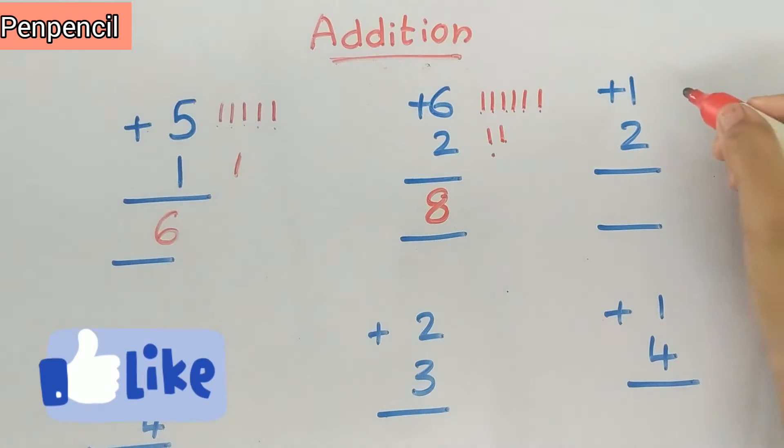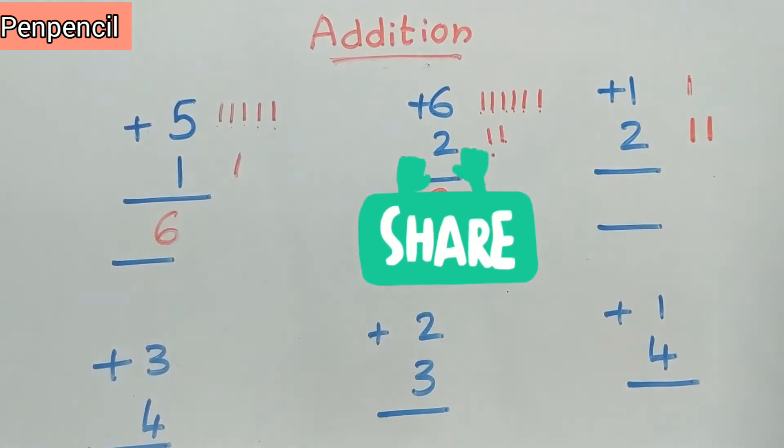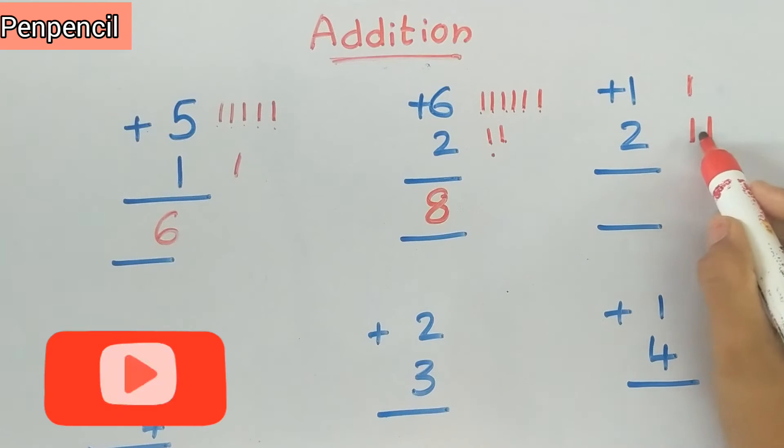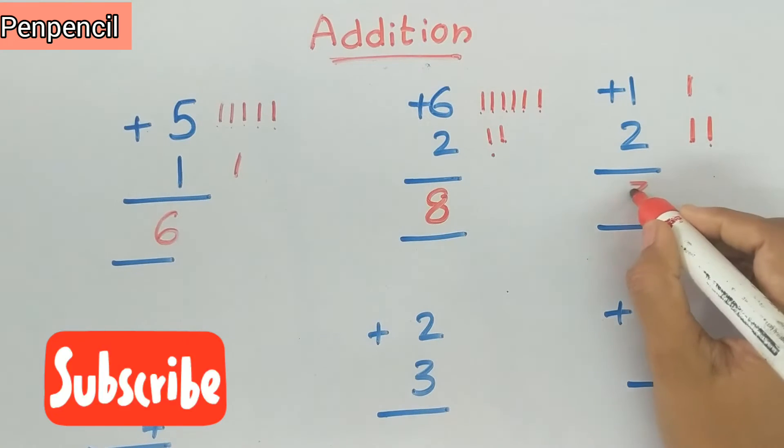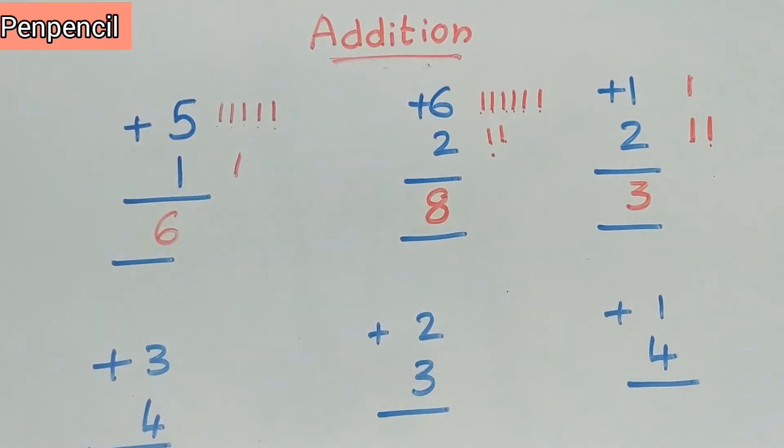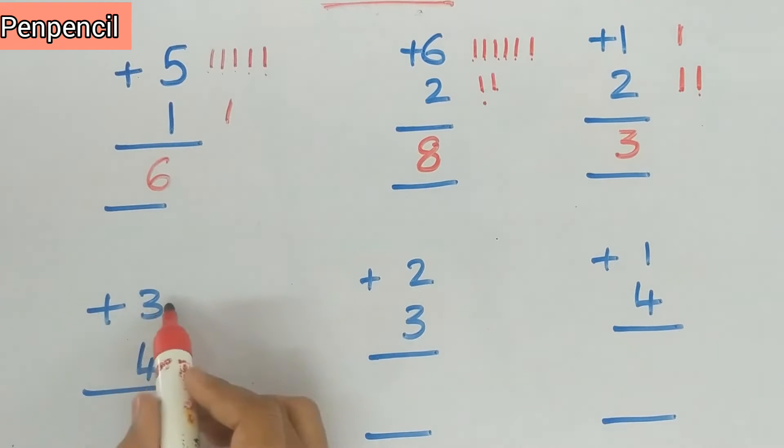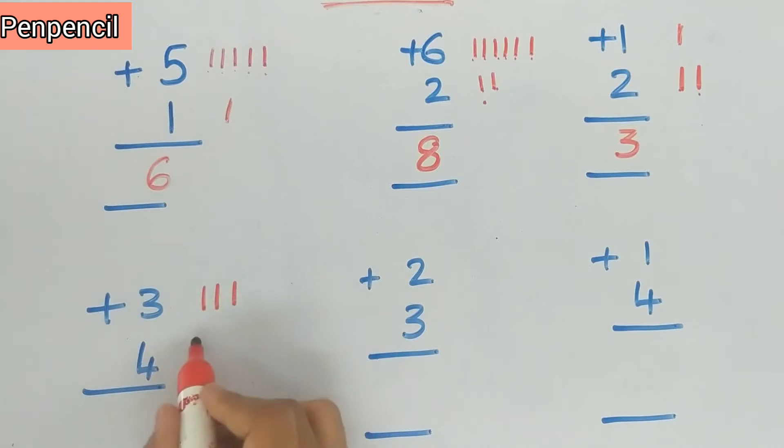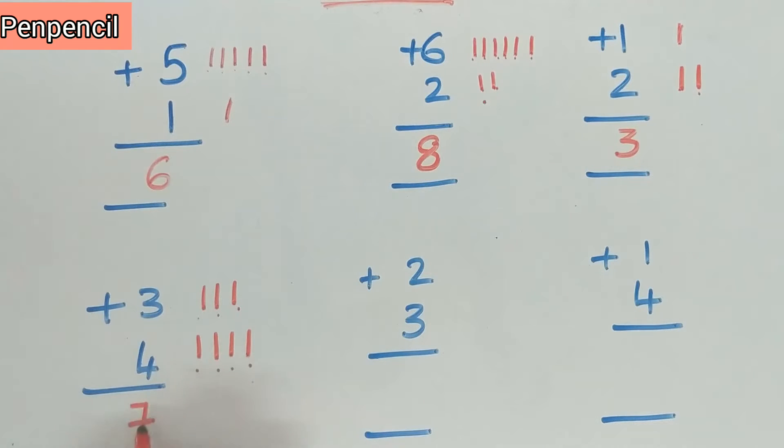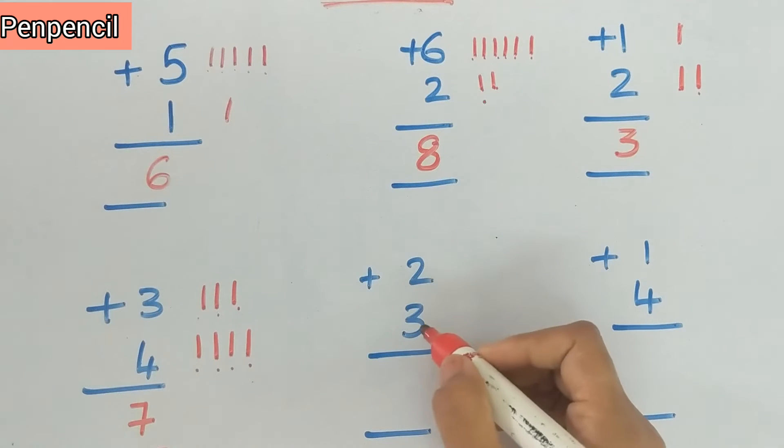This way we have to do. Now we will do the third sum: 1 plus 2. Now again count all: 1, 2, 3. So the sum is 3. 2 plus 3.